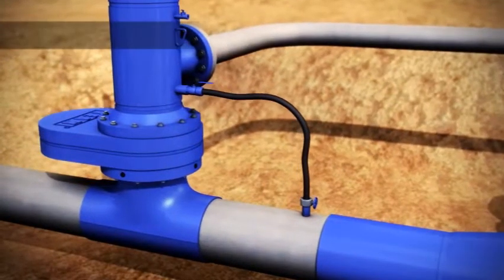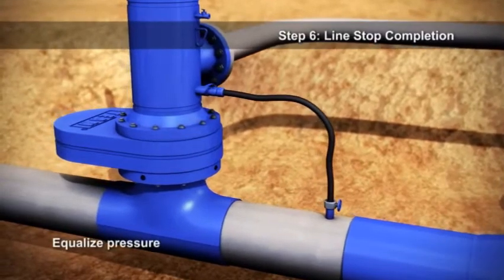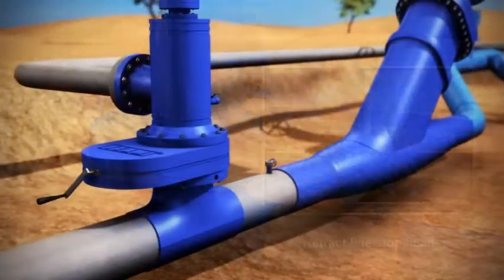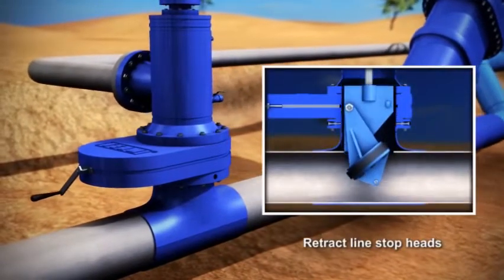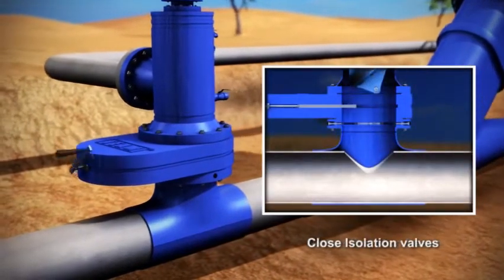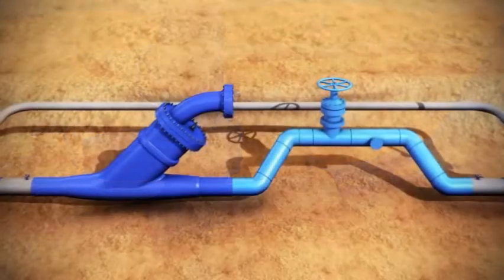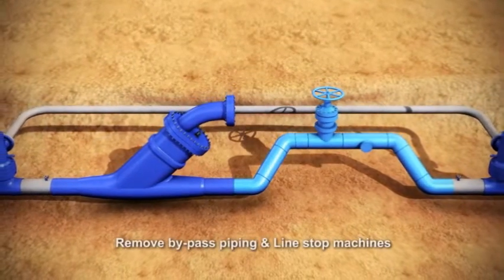Step 6: Line Stop Completion. Upon pressure equalization, the line stop heads are retracted into the line stop housings. The isolation valves are closed and flow is restored to the pipeline. The bypass piping and line stop equipment is removed.